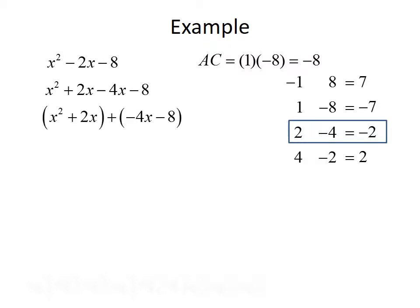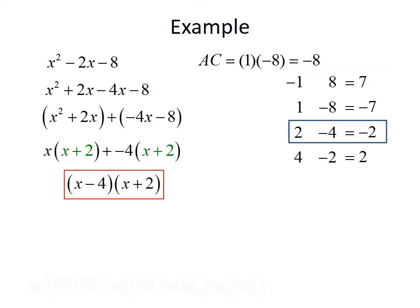We group the first two terms and the last two terms, keeping the minus sign on the third term inside the parentheses. We factor x from the first group, giving x times x plus 2. We factor negative 4 from the second group, giving negative 4 times x plus 2. Since x plus 2 is a common term in both groups, we factor that out, leaving us with the factorization x minus 4 times x plus 2.